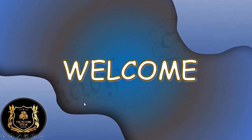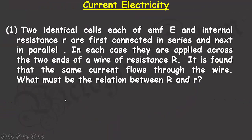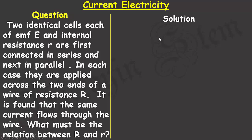Welcome to my YouTube video. Today we're going to take you through current electricity, and to aid your understanding I will solve a single problem. Two identical cells, each of EMF capital E and internal resistance small r, are first connected in series and next in parallel. In each case they are applied across the two ends of a wire of resistance R. It is found that the same current flows through the wire. What must be the relation between capital R and small r?